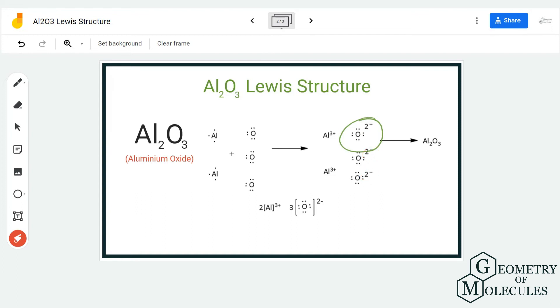So put a bracket over here, write the charge over here, and repeat the same for all three atoms of oxygen. Now, when you look at the aluminum atom, it is giving away three electrons, so it will acquire a positive charge. So write plus three charge over here.